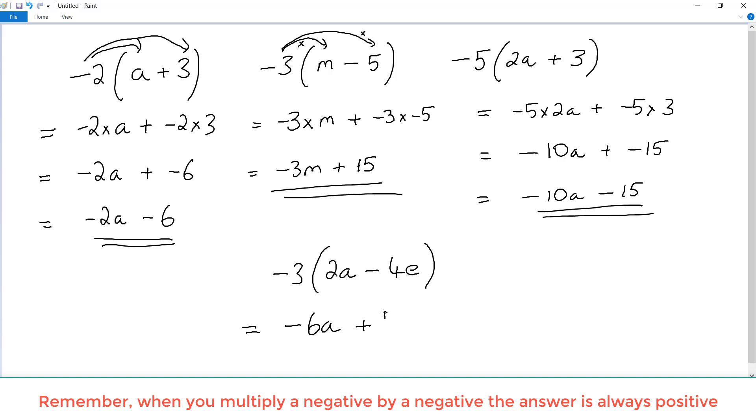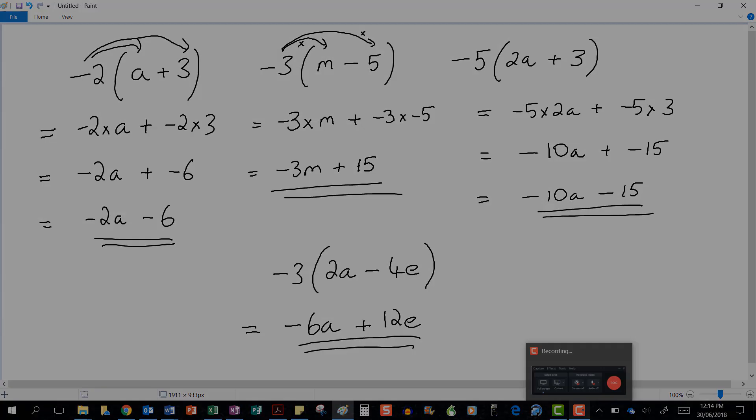and negative 3 times negative 4 which is 12, so plus 12, and don't forget the e. Again, only show no working if your teacher likes it.